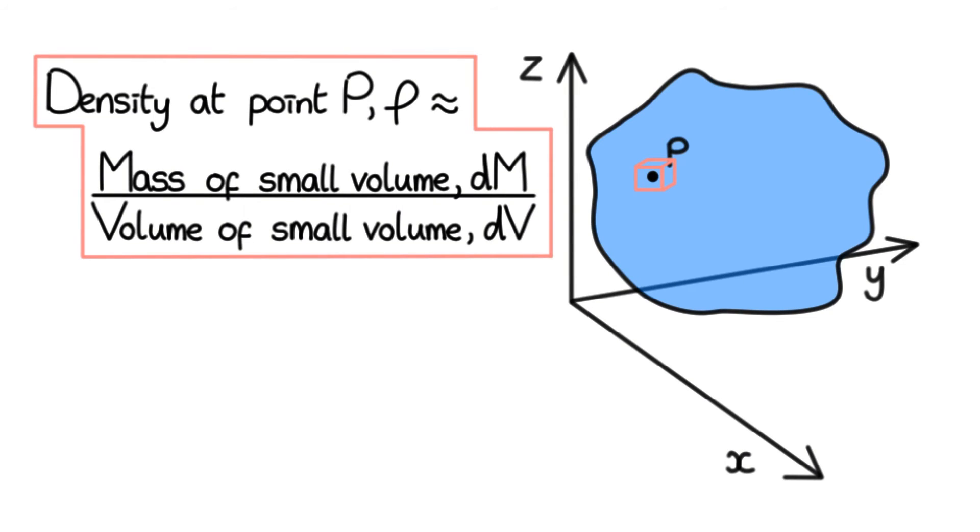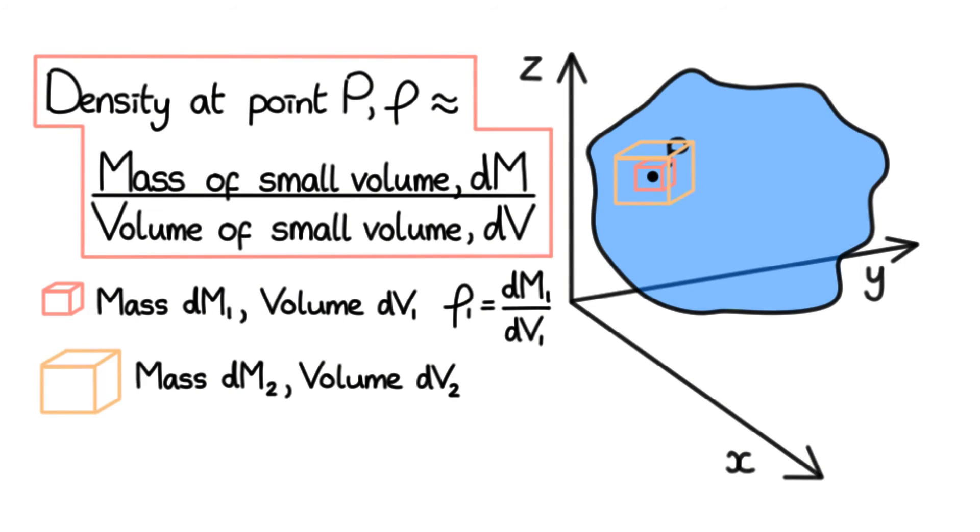Let's imagine we calculate the density centred at point P this way using different volumes. For example, let this red volume now have mass dM1 and volume dV1. We can call the estimated density at point P due to this red volume, rho 1. This would be dM1 over dV1. Likewise, let's make a slightly larger volume that has mass dM2 and volume dV2, also centred at point P. The density at point P estimated from this volume, rho 2, would be dM2 over dV2.